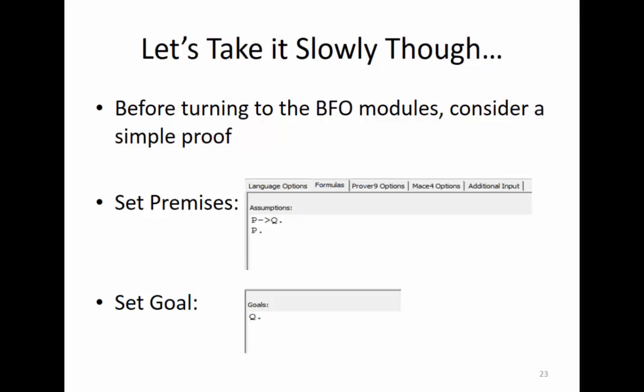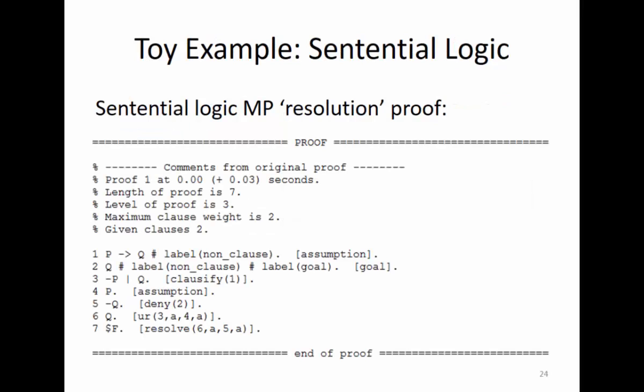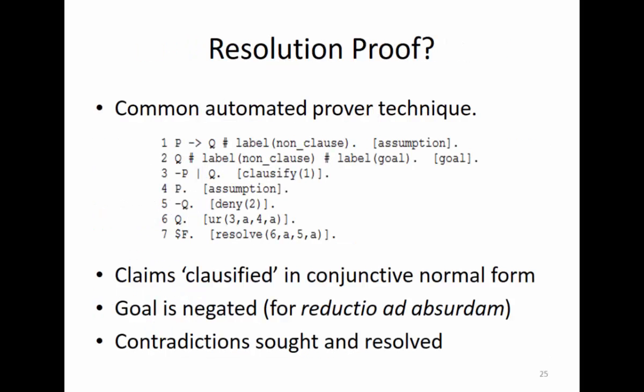You set the premises in the GUI - the graphical user interface - and then you set a goal. This is what I was talking about regarding creativity: you've got to figure out what the goal is. This is just modus ponens - here's the proof. It's a sentential logic modus ponens resolution proof. Prover9 works by resolution: it clausifies premises, putting them in conjunctive normal form - a series of disjuncts conjunctively joined with negations. So P then Q is logically equivalent to not-P or Q, clausified in that way. Then it negates the goal and tries to find a contradiction.